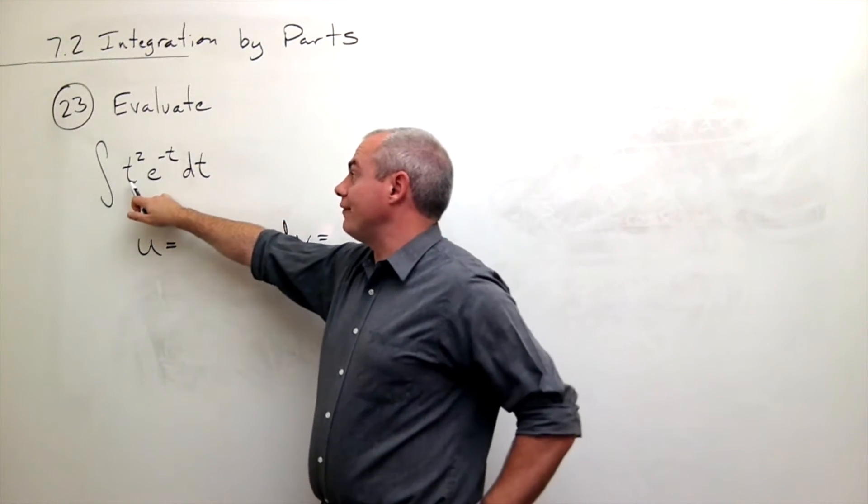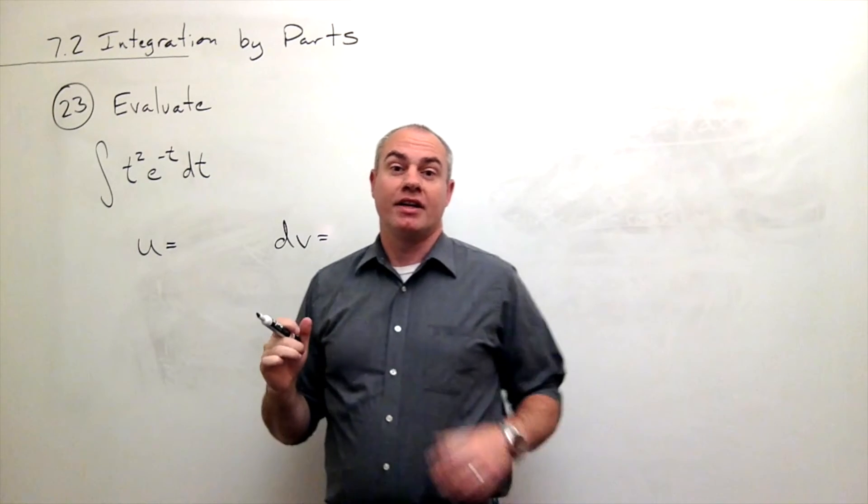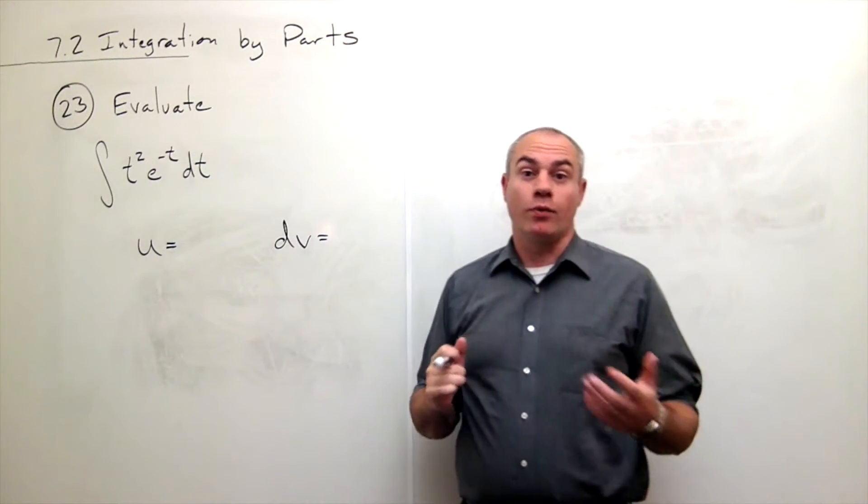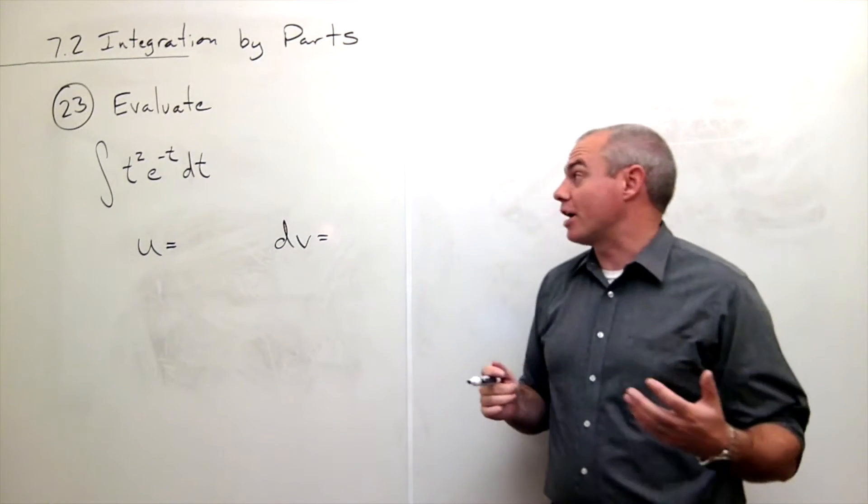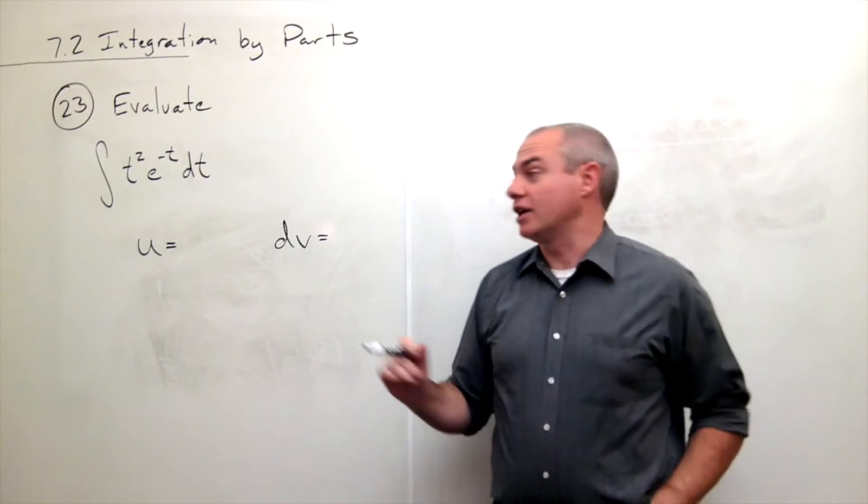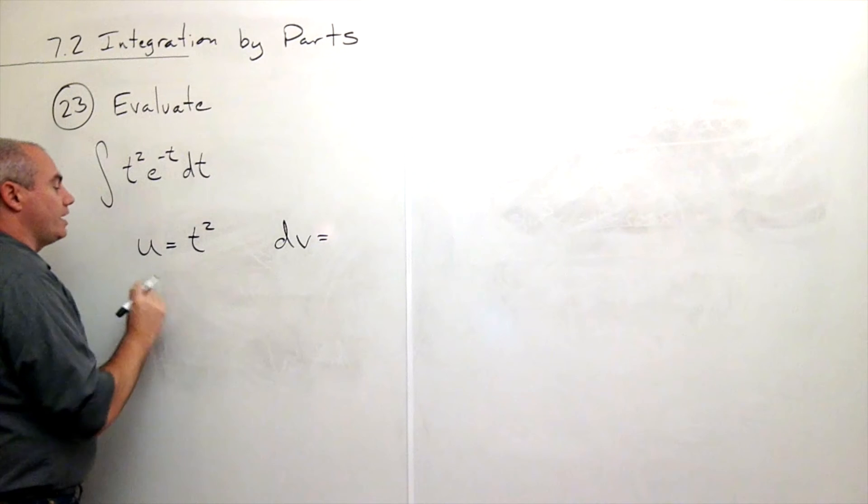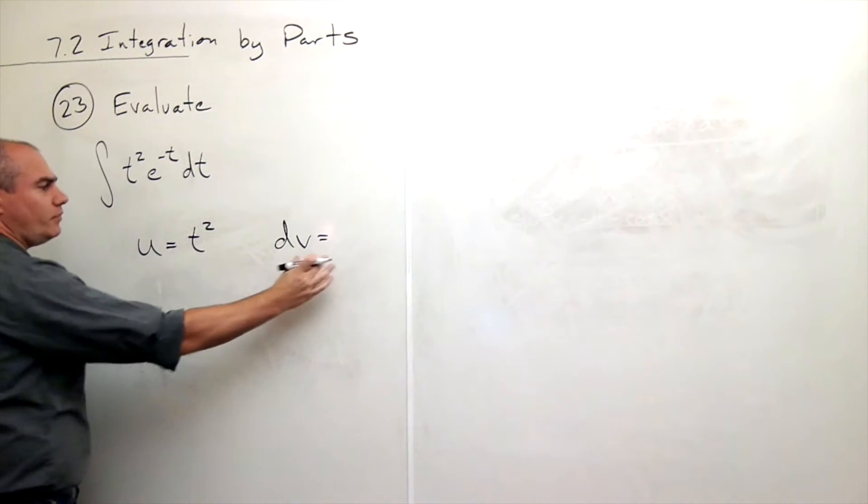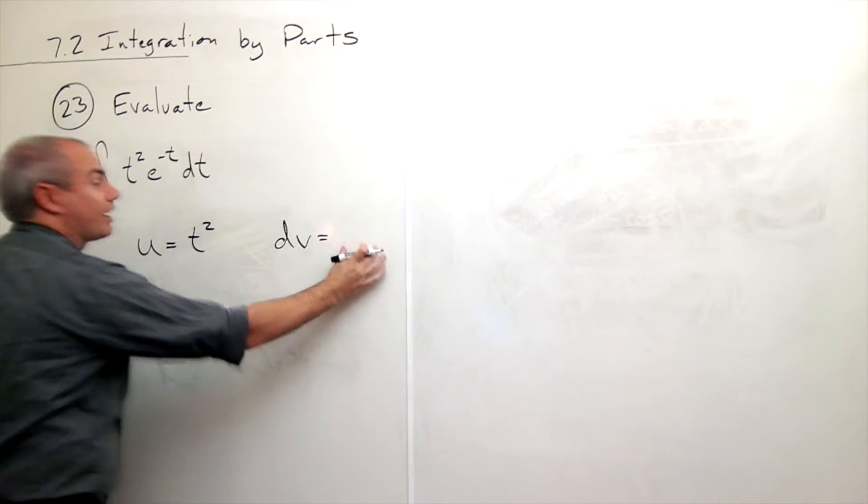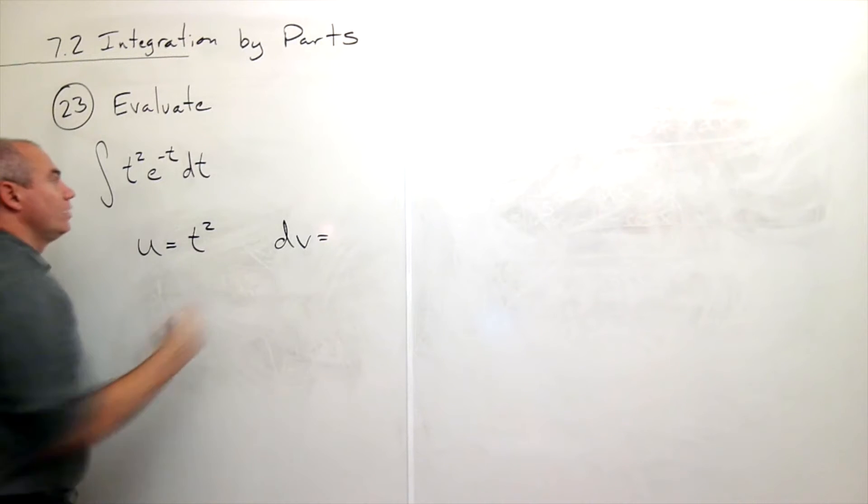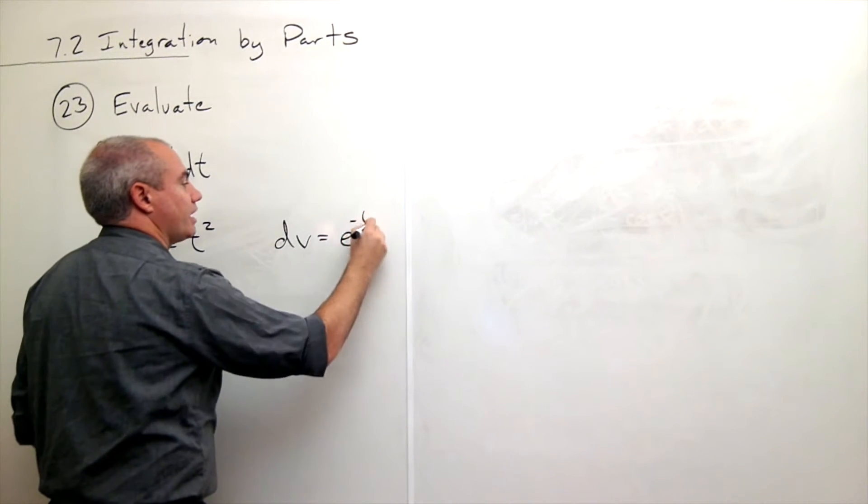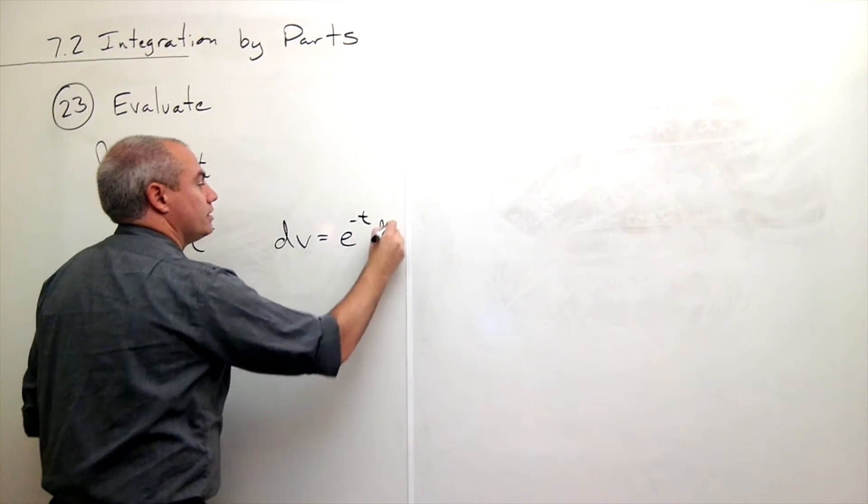Taking the derivative of t squared gives me a 2t which is a simpler expression than t squared. So let's put the t squared in as my u and that means that everything else is going to be my dv which is e to the negative t dt.